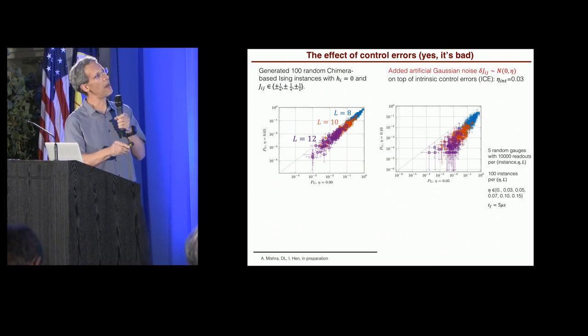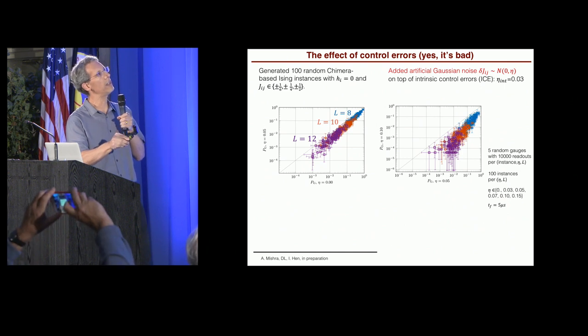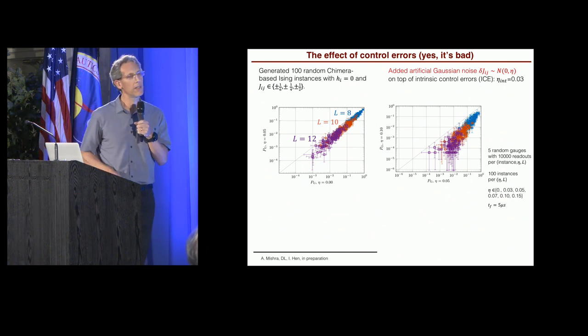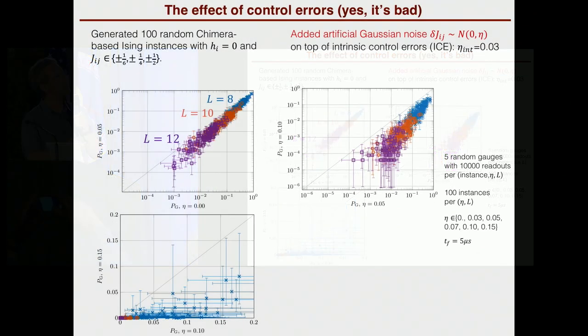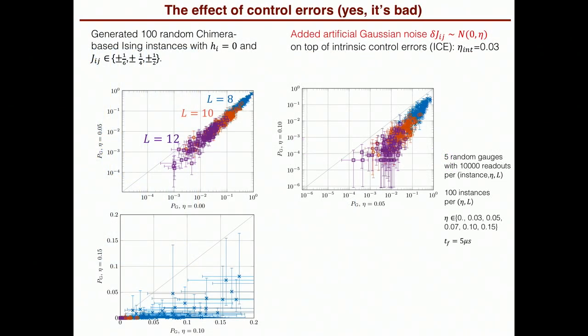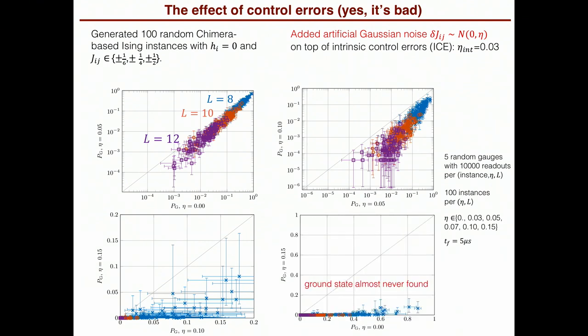Here is the same experiment, but now we're comparing 0.05 to 0.1. The effect gets worse. 0.1 to 0.15, the effect gets way worse. All right, and to make the point here, we're comparing the 0 added noise to the 0.15 added noise, which was the strongest. And you can see that the ground state is almost never found when we add 0.15 noise compared to the case where we added no extra noise. So the problem is indeed bad, okay? It really destroys the machine's ability to find these ground states.